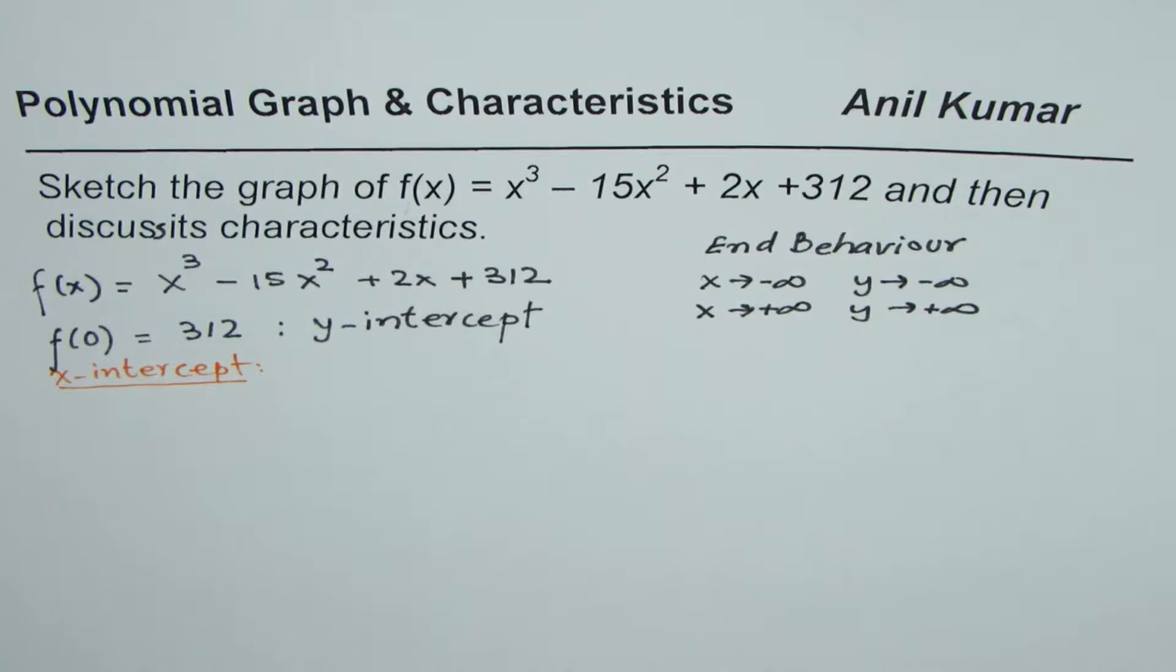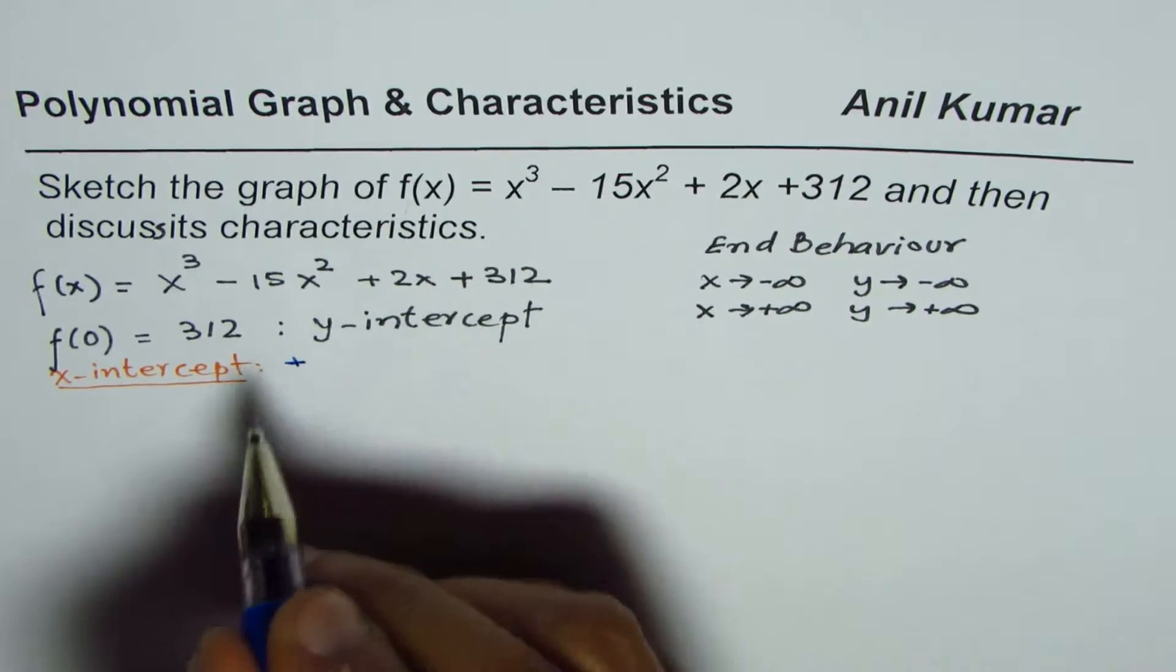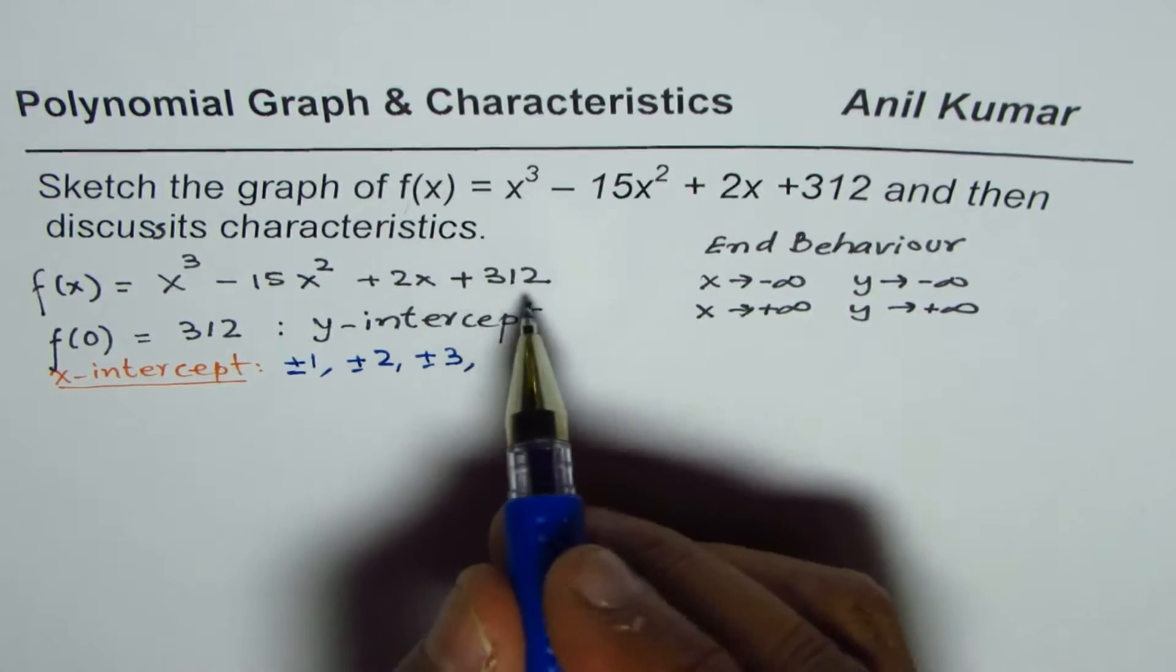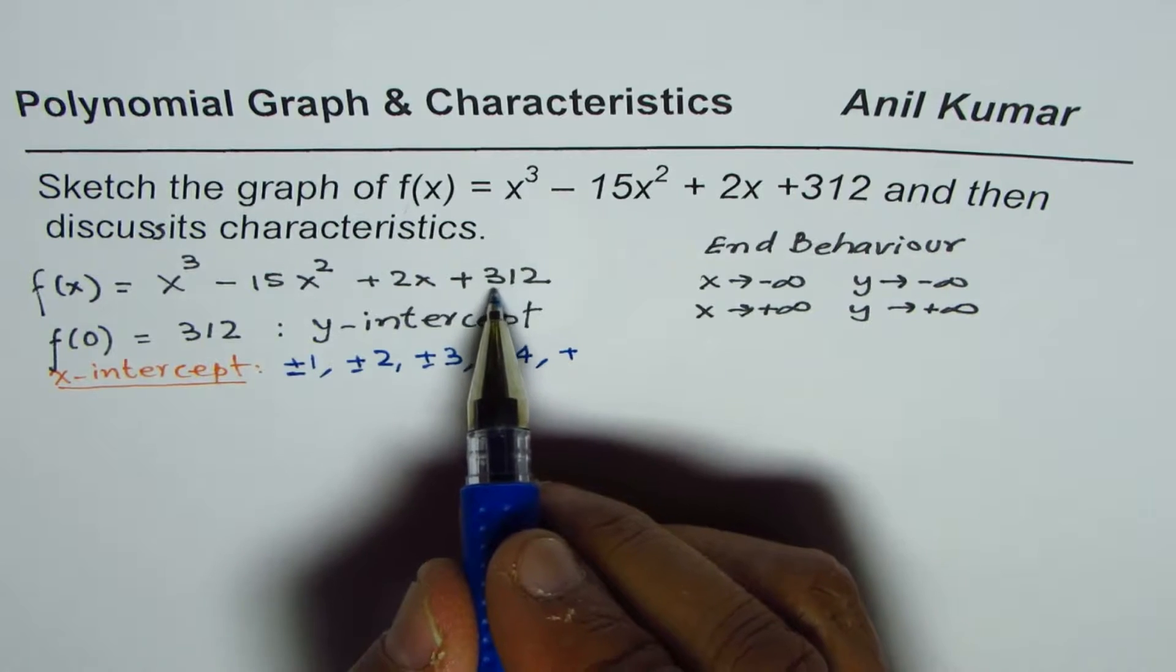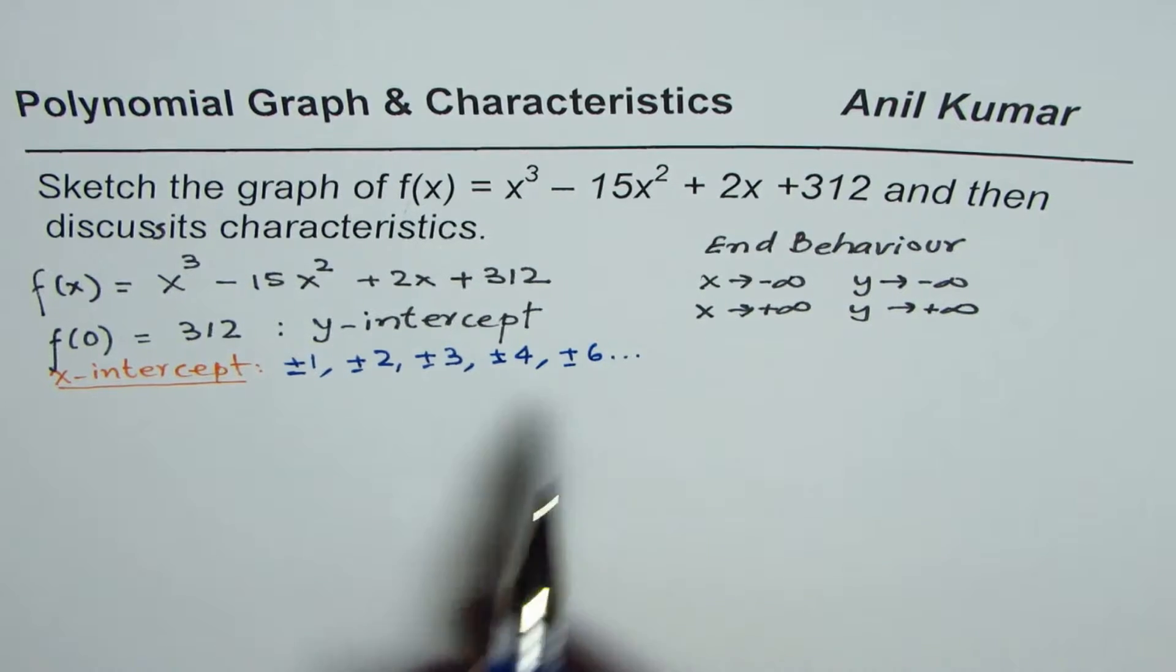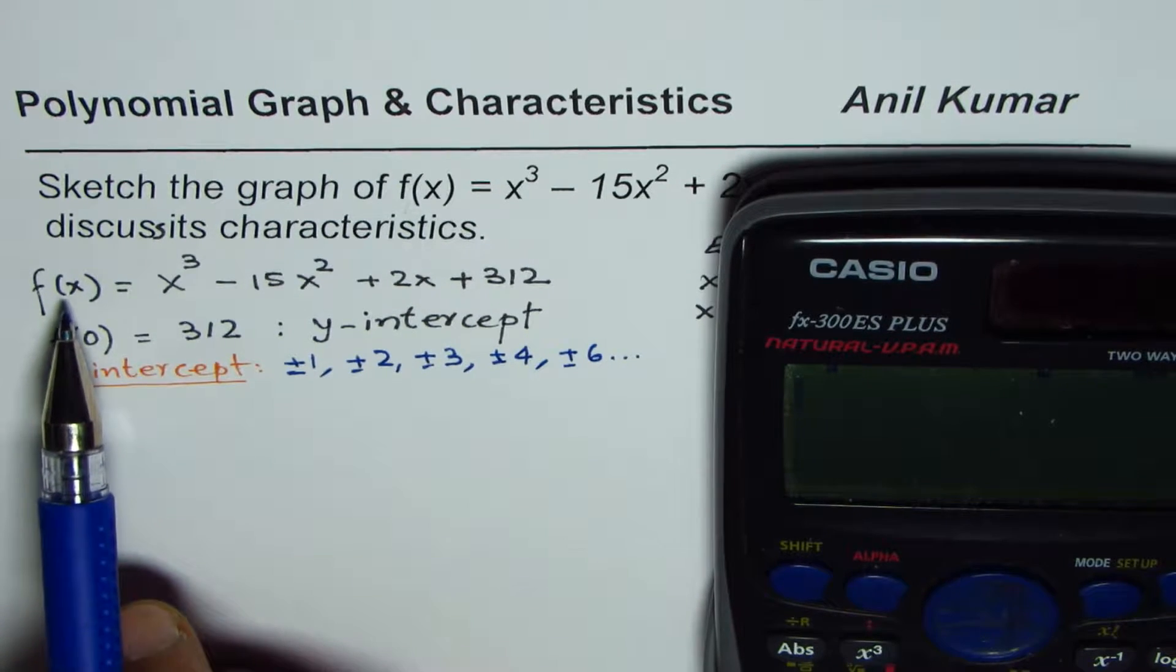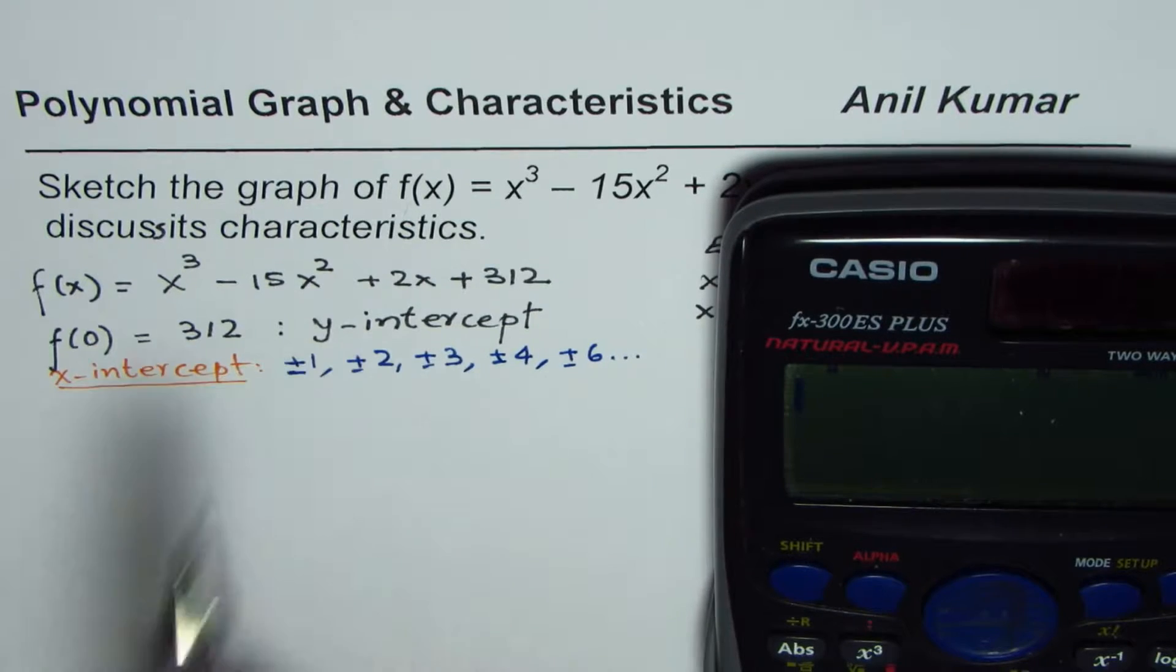312 is even number. So the factors, there are many factors like ±1, ±2, ±3, ±4, ±6 and so on. So these are all the possible factors. What you need to do is take a calculator, substitute these values one by one, and then see if you get zero or not. So the value which gives you zero will be the factor.